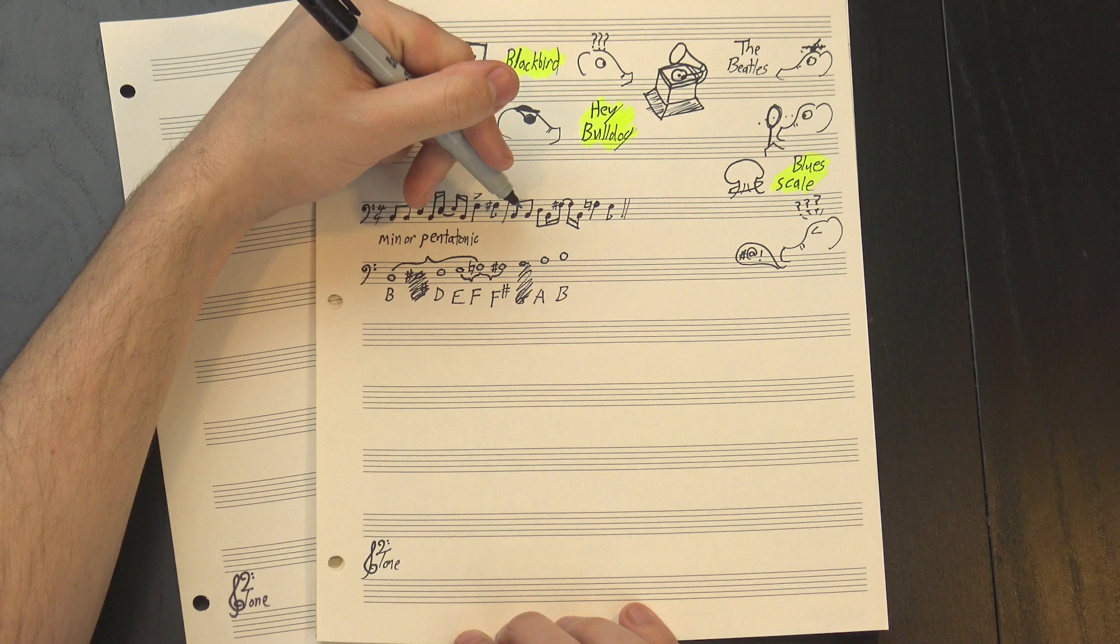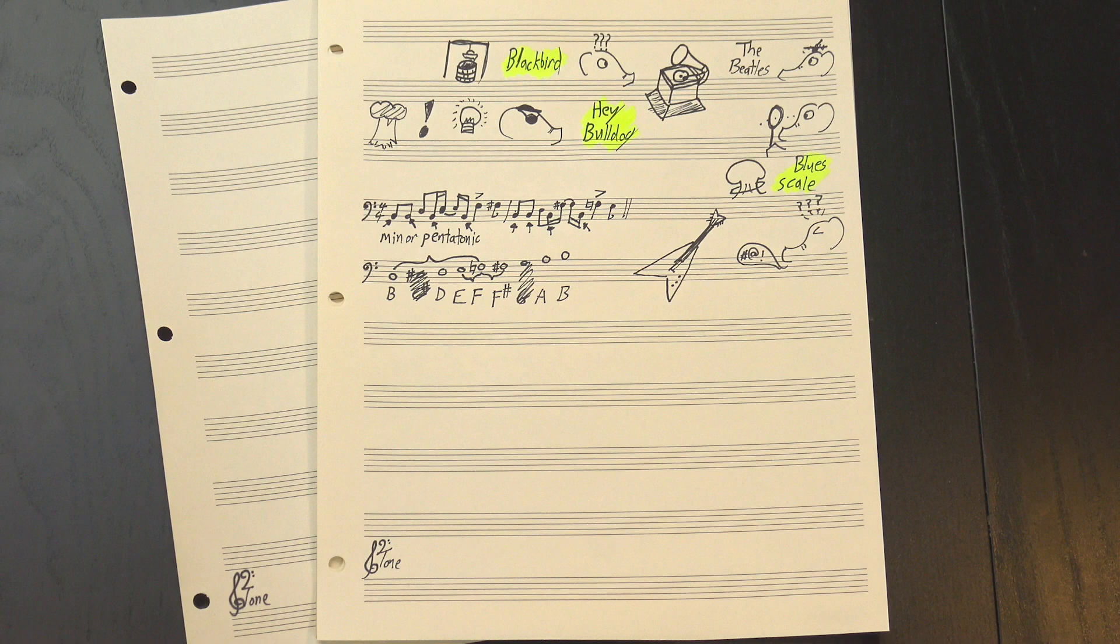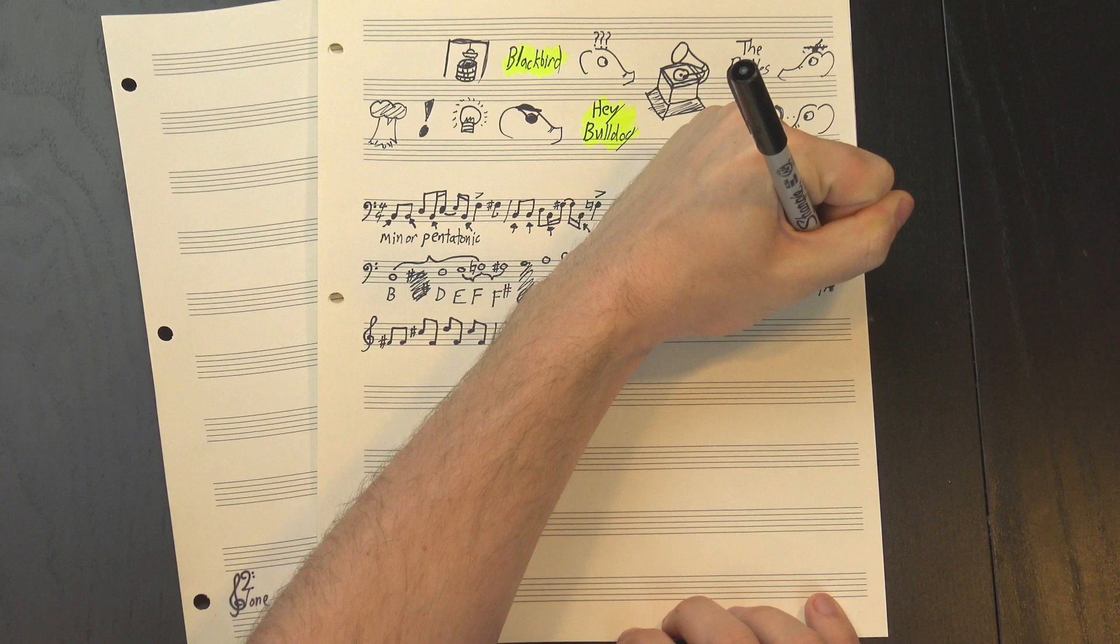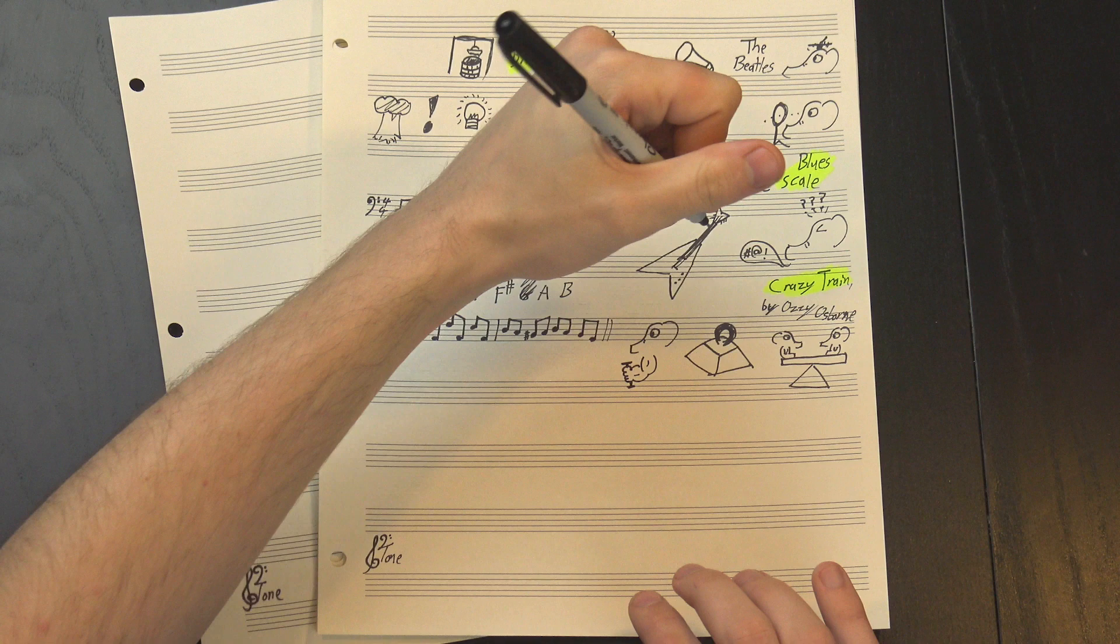The other thing I want to mention about this riff is its use of the root note. It starts by playing it twice, and it features prevalently throughout the entire thing. I see this a lot in heavy, bluesy riffs, probably most famously this one, from Crazy Train by Ozzy Osbourne. I think this works because the root note is the most stable note in the key, and also usually the lowest note in these riffs, so leaning on it like this helps the whole thing feel grounded and powerful. That's my theory, anyway.